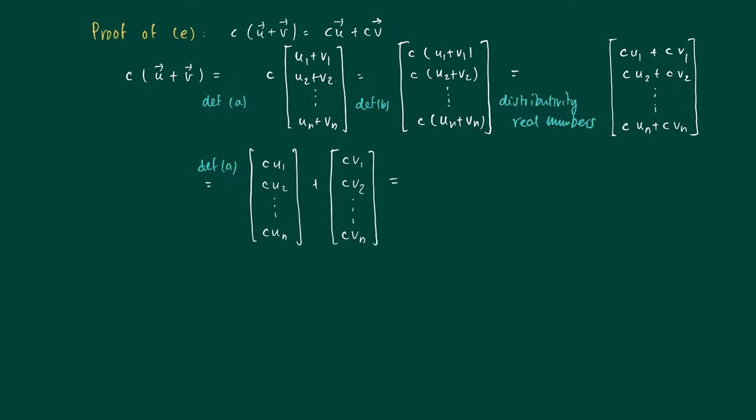Now use the scalar product again to see that this equals c times the vector u, and c can also be put outside the vector due to the same property b, giving us c times the vector v. So we have c times the vector u plus c times the vector v, which we needed to show.